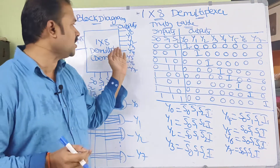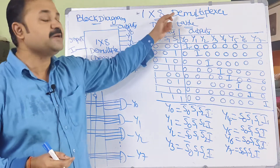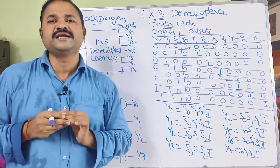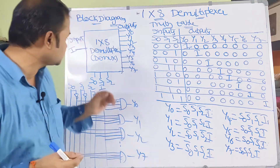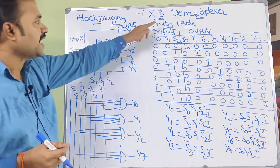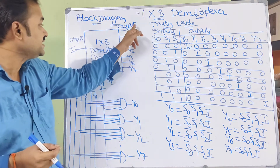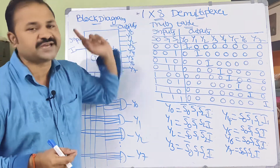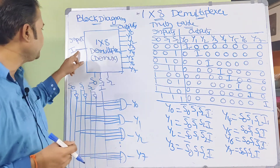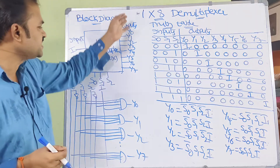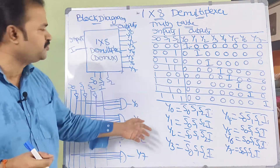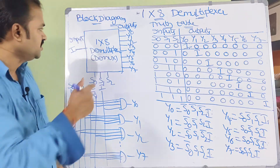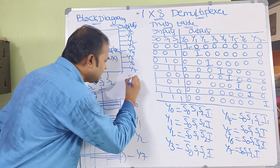First, let us see the block diagram. The name itself specifies the meaning. A 1 by 8 demultiplexer has 1 input and it totally produces 8 outputs. Let the input be I, whereas the outputs are Y0 to Y7 — totally 8 outputs.